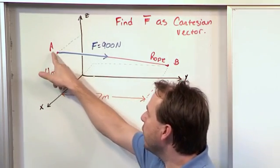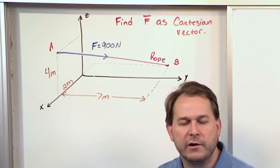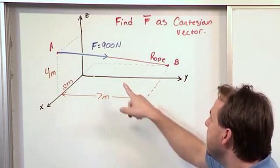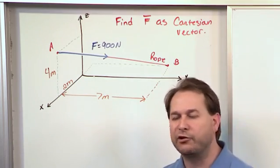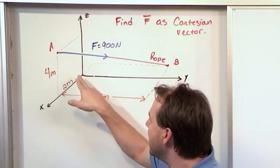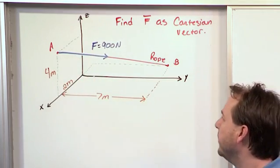and we have a rope tied from point A. Maybe you have someone standing over here or some kind of tension device pulling on it. It's pulling with 900 Newtons, but the primary thing we're trying to get across here is the force vector is not starting at the origin. It starts from point A and terminates at point B.